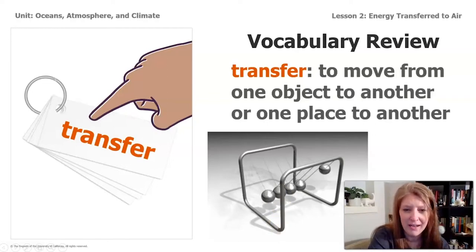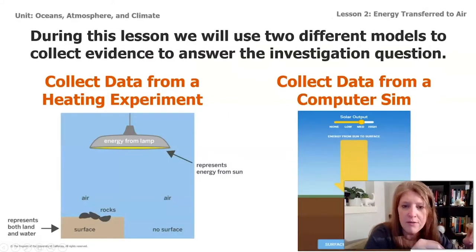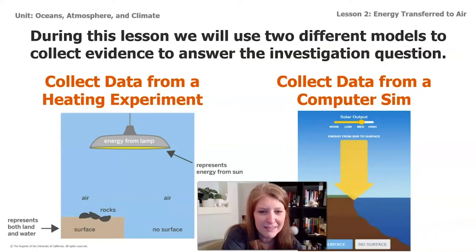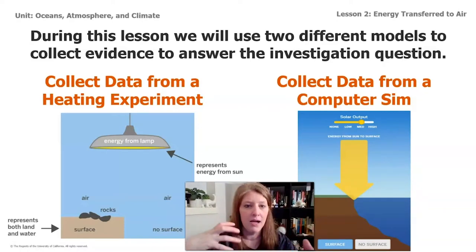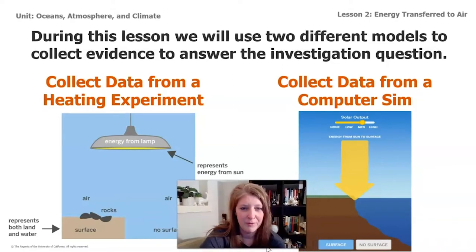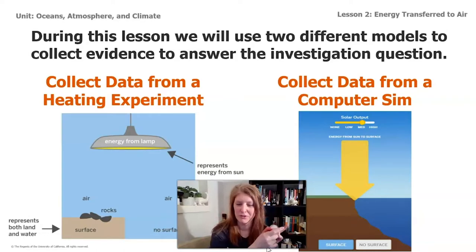But how is the air on our planet getting heated at all? During this lesson we're going to use two different models. Scientists have to use models sometimes to study something they can't observe directly. We have the model from the experiment and we have the computer model, which we're going to use to collect evidence, and I'll make a video of each one that you can watch.